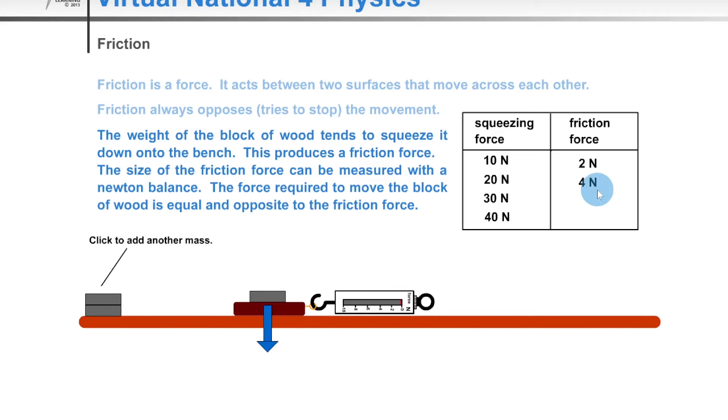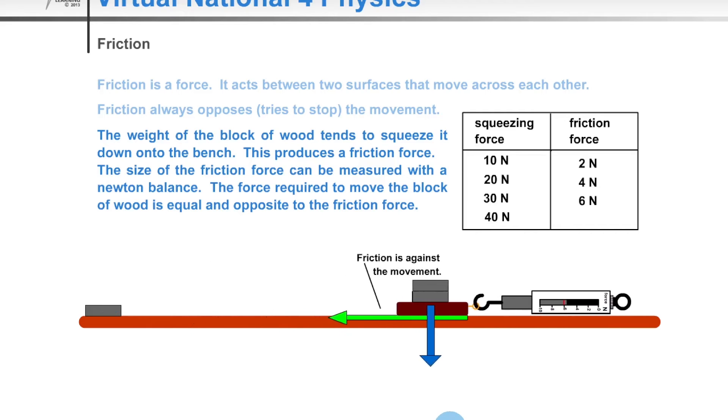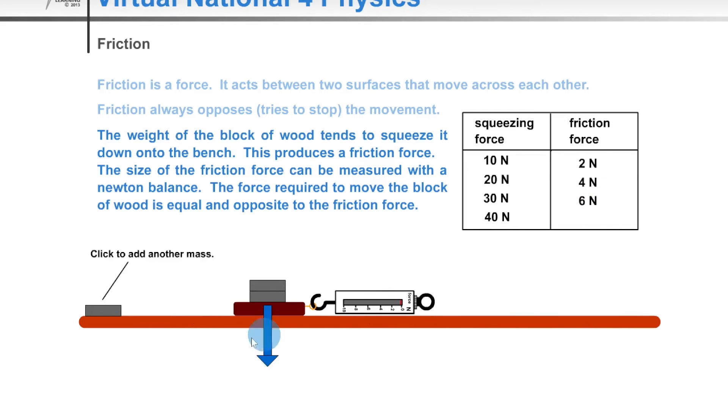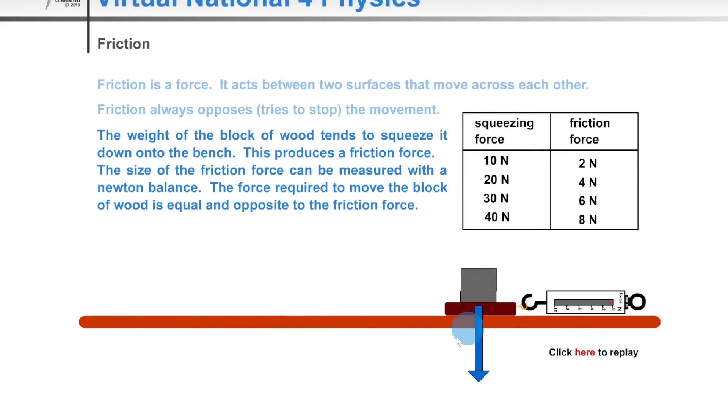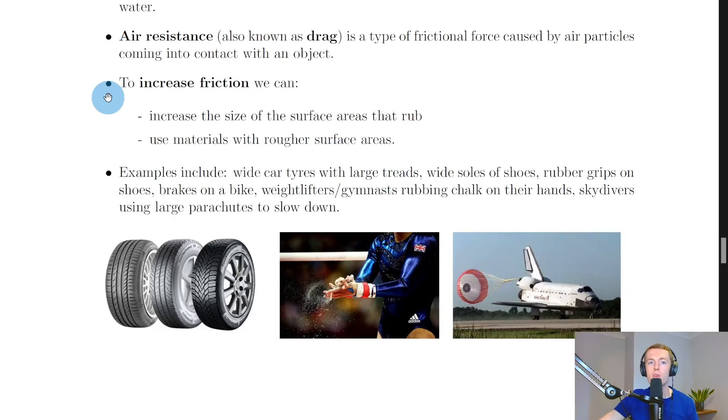We can then add a mass on, and this is hopefully going to increase the friction. Now we have a value of 4 Newtons, and we can add more mass on. Now we have 6 Newtons, and more mass on gives us a value of 8 Newtons. So you can see that as we added more mass onto the wooden block, it made it harder for the block to move, and that increased the frictional force.